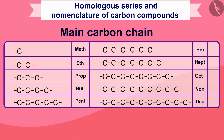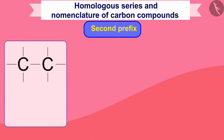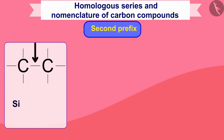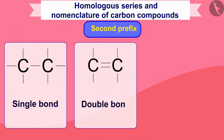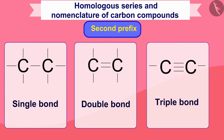You can then see whether the carbon compound has a single bond, double bond, or triple bond. If there is a single bond, write 'ane'. If there is a double bond, write 'ene'. If there is a triple bond, write 'yne'.